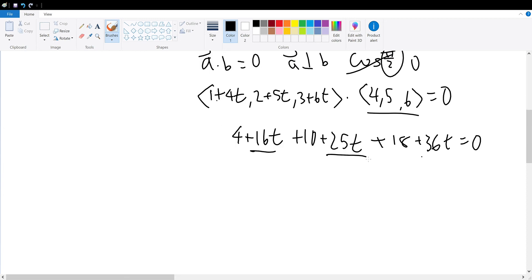So, now we combine the like terms of 16t, 25t, and 36t together, which 16 plus 36 is equal to 52 plus 25 will be equal to 77t. Add it to 4 plus 10 is 14, 14 plus 18 is 32, which is equal to 0. Subtract 32 on both sides to get 77t, which is equal to negative 32. Divide by 77 on both sides to get t is equal to negative 32 over 77, which this ratio cannot be simplified further.